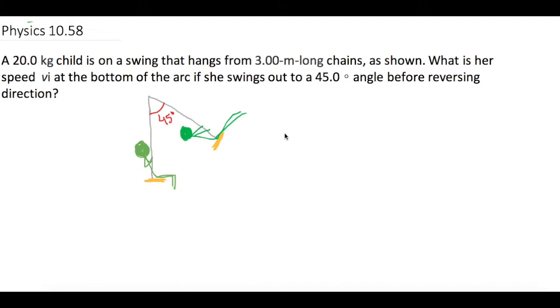A 20-kilogram child is on a swing that hangs from 3-meter-long chains, as shown. What is her speed at the bottom of the arc if she swings out to a 45-degree angle before reversing direction?